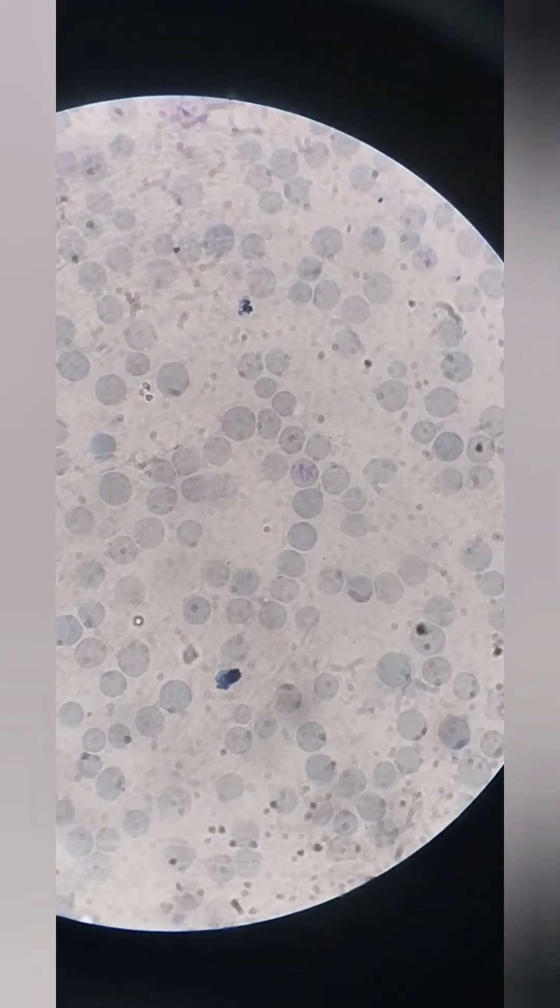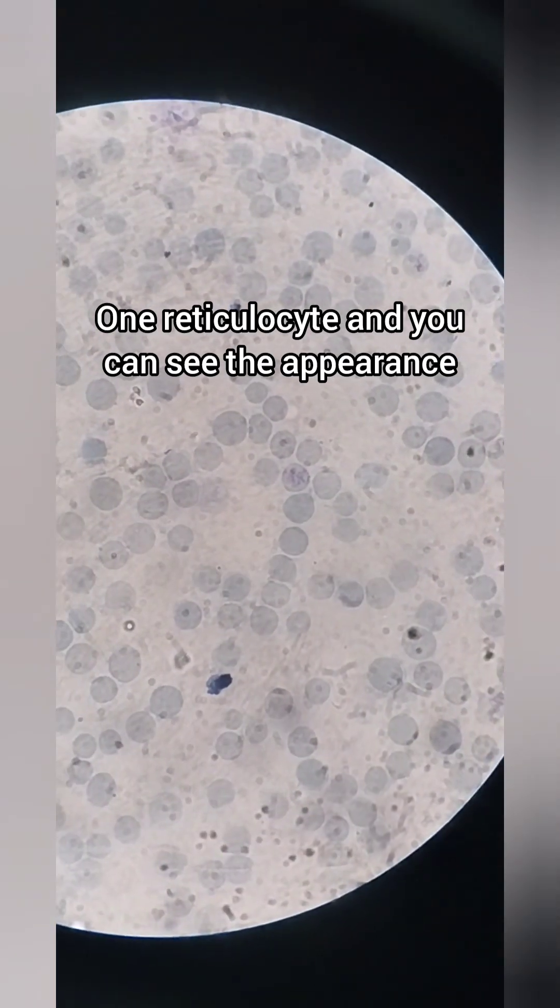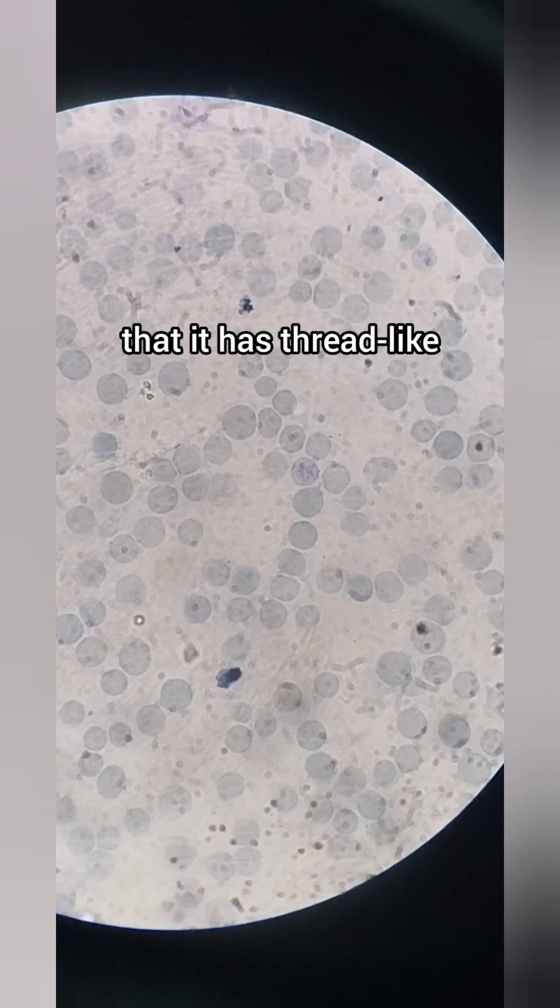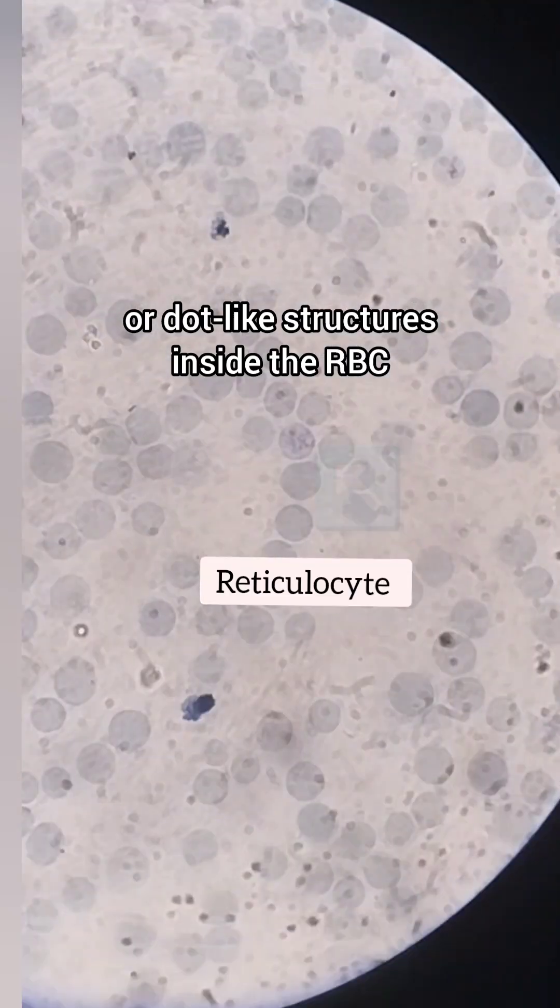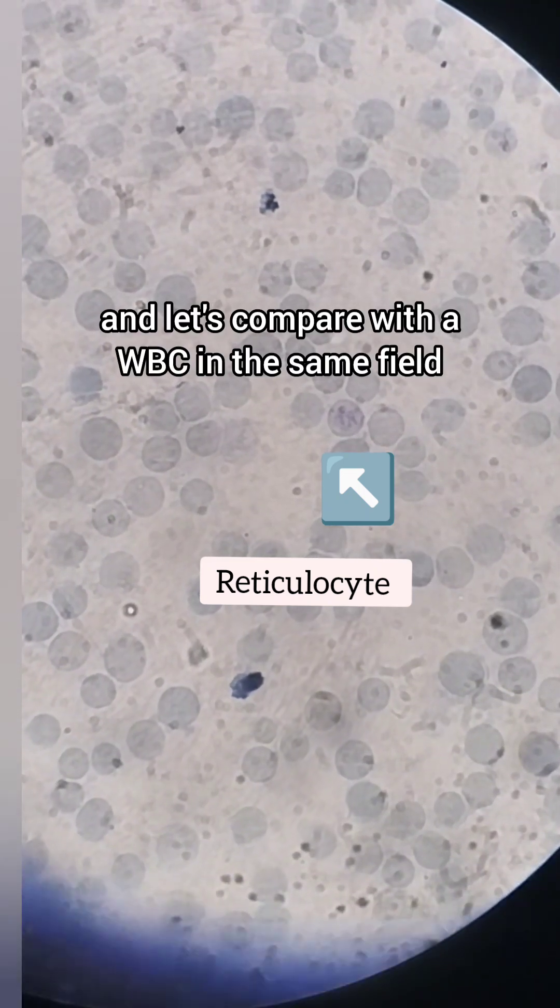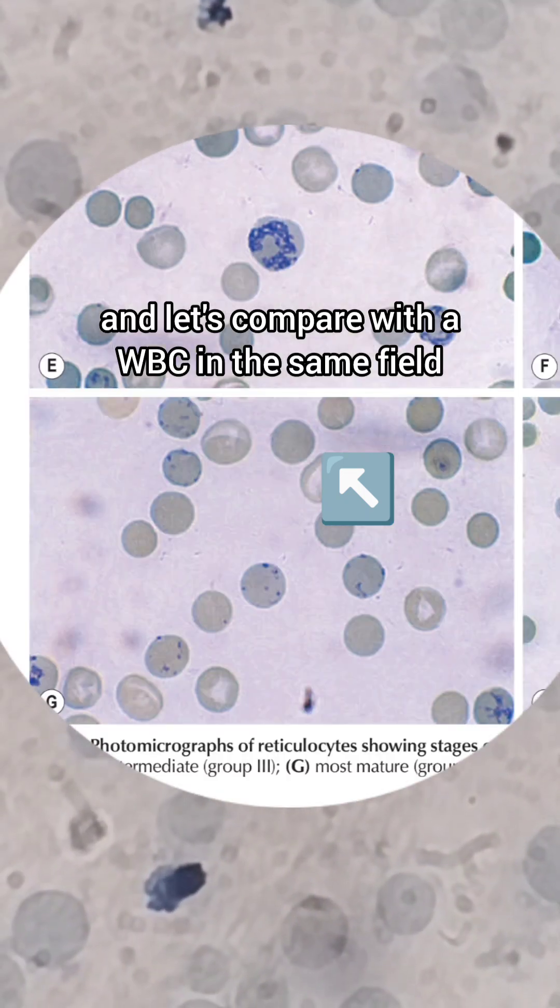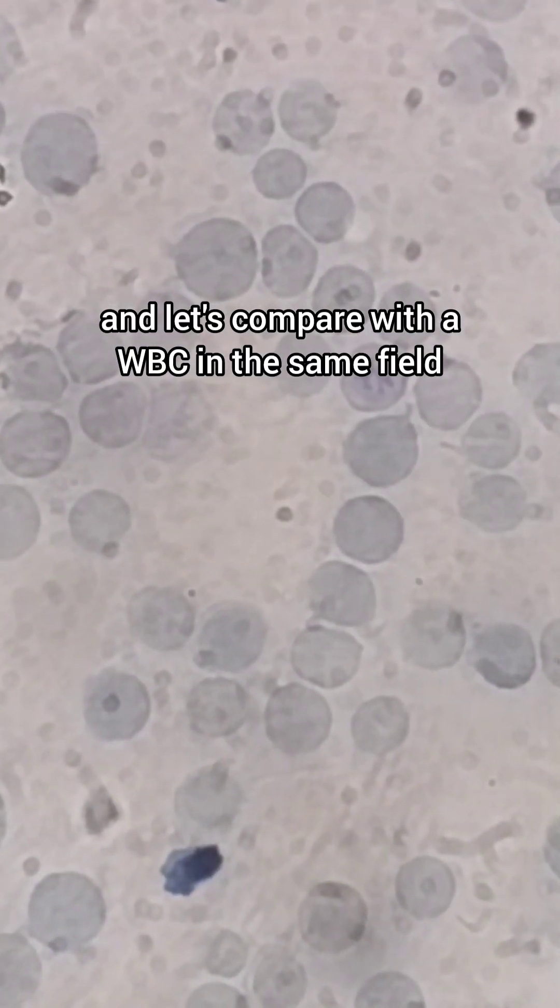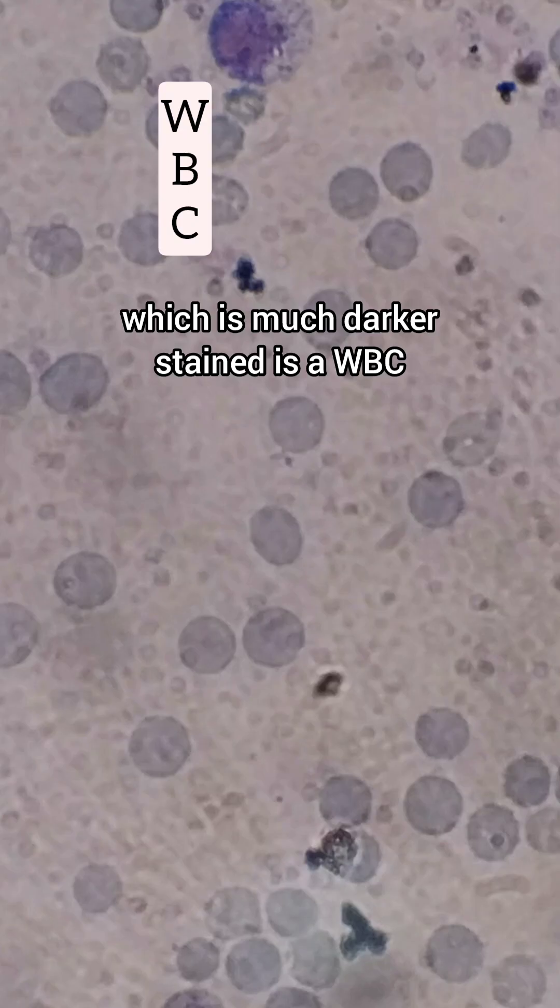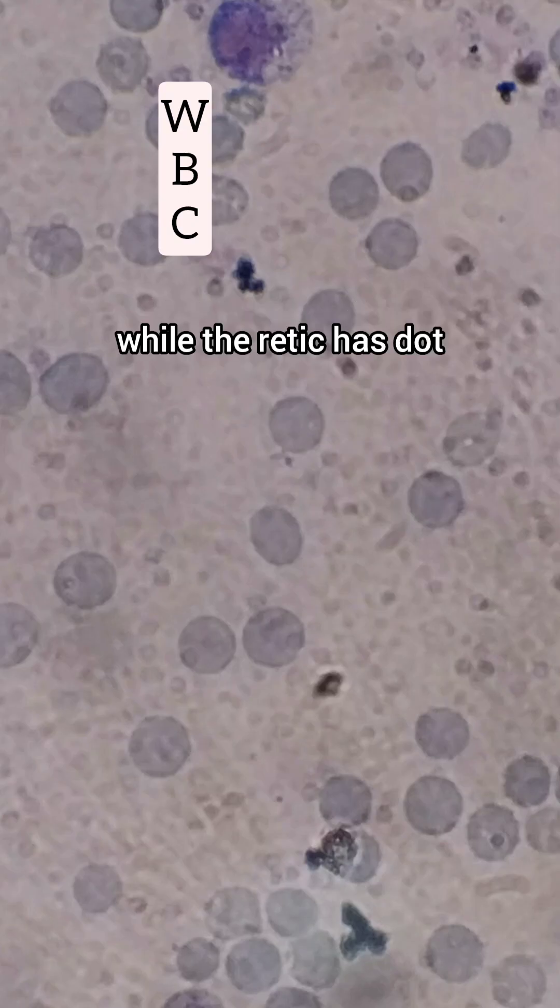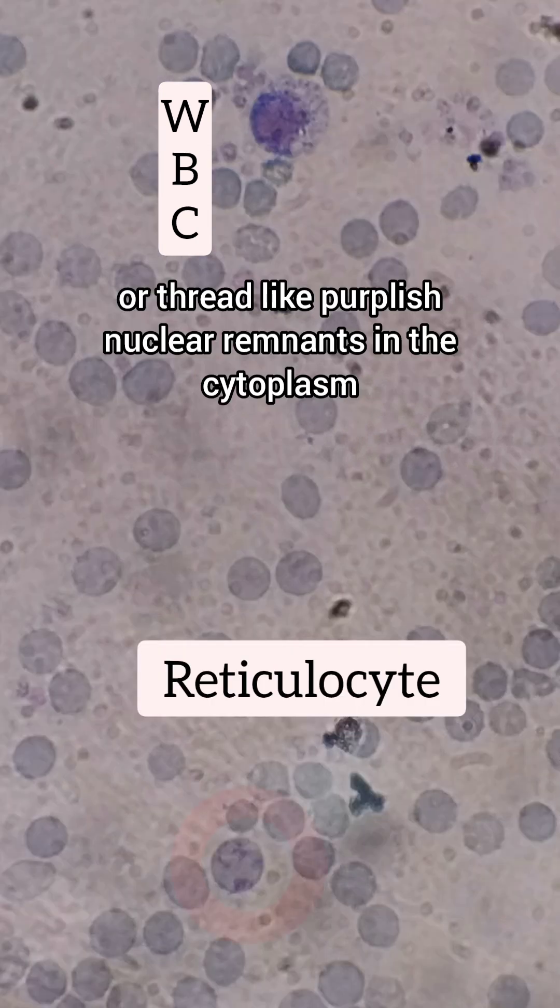One field is showing one reticulocyte, and you can see the appearance that it has thread-like or dot-like structures inside the RBC. Let's compare with a WBC in the same field. You can see that this one which is much darker stained is a WBC, while the retic has dot or thread-like purplish nuclear remnants in the cytoplasm.